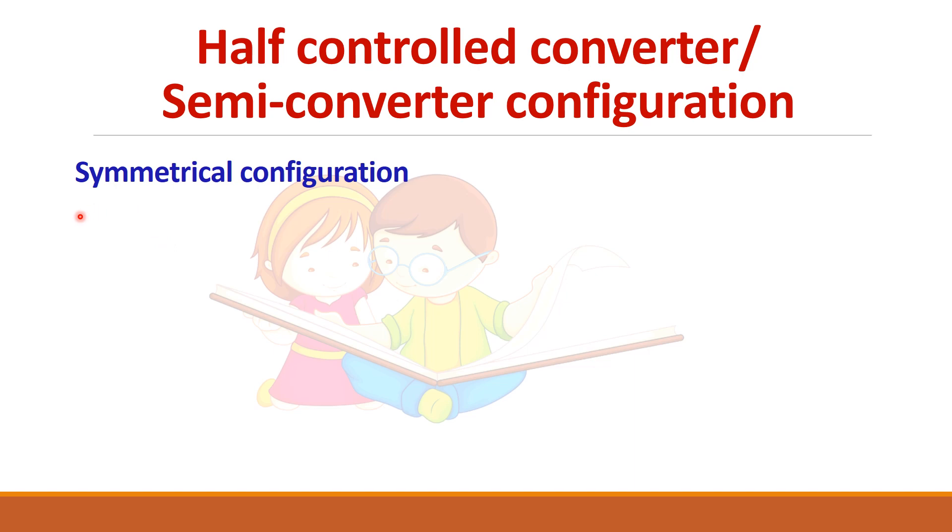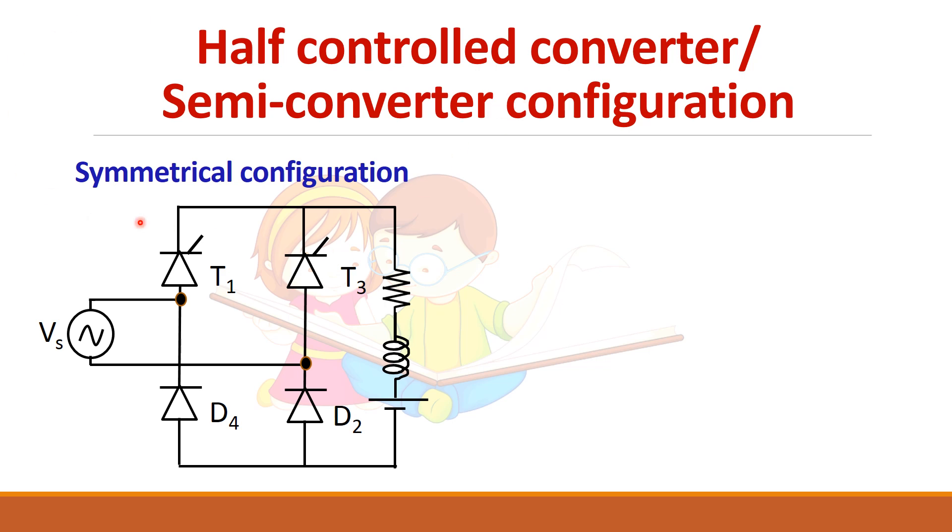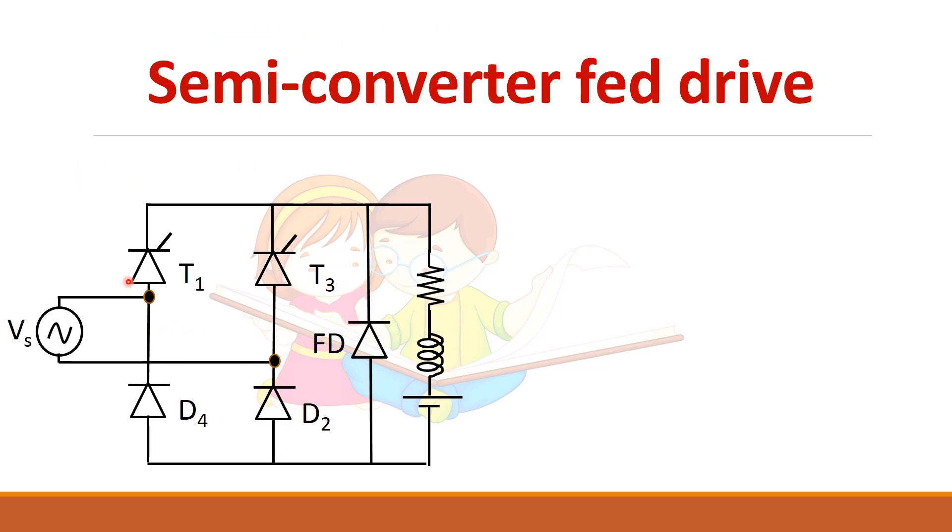So let us see its configuration. Actually there are two configurations symmetrical configuration and asymmetrical configuration. So in symmetrical configuration you can see two thyristors are placed in the upper leg and diodes are placed at the bottom. In some cases they will place two thyristors in same leg and two diodes in another leg. But we are not going to study about that. So this is the symmetrical configuration where all the leg have one thyristor and one diode. So this is the semi converter fed drive which is supplying the motor load which is represented by R, L and E and a freewheeling diode is connected across the motor.